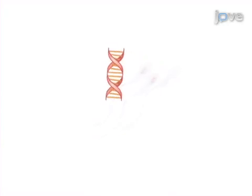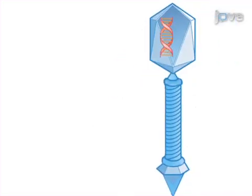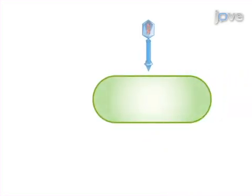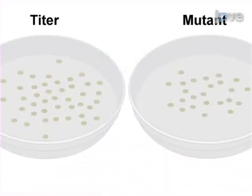Next, DNA containing the mutation reporting transgene is recovered from the germ cells. The final step is to package the recovered reporter genes into lambda phage particles. Ultimately, an in vitro positive selection assay is used to measure the proportion of reporter genes recovered from the germ cells that have been mutated.